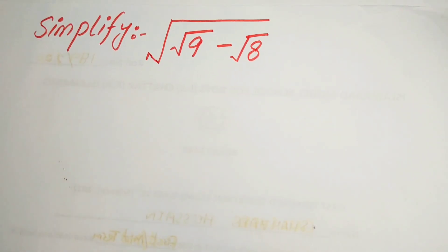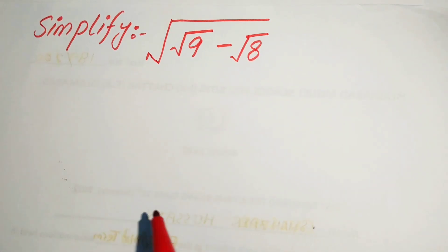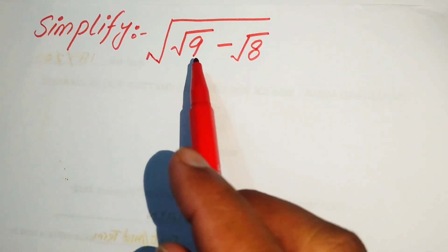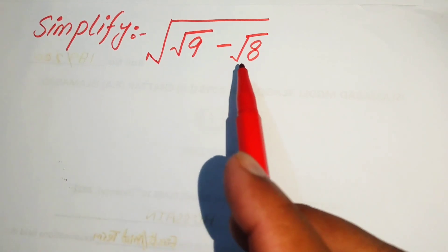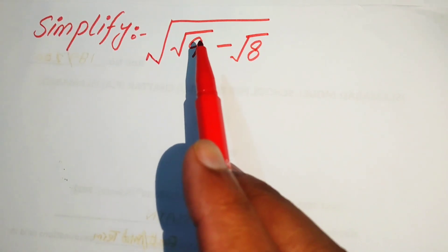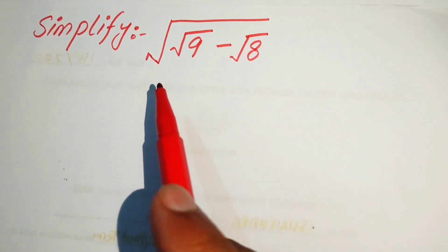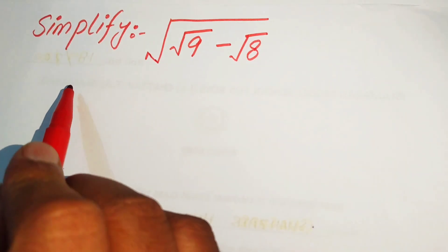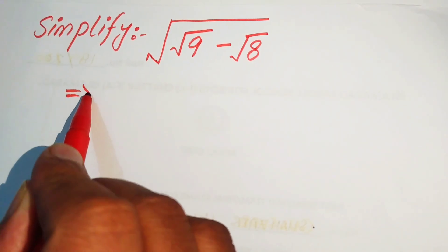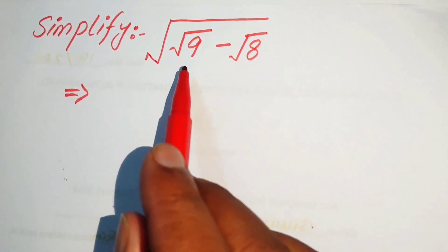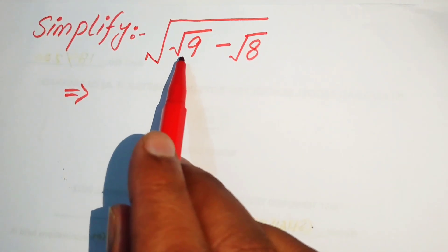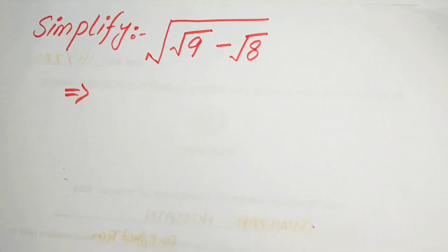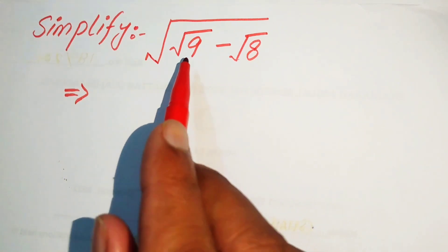Hello everyone. How to simplify this nice algebraic expression: we have a square root of 9 minus square root of 8, and its whole square root. We write this into simplified form. First, we focus on its base, which is square root of 9 minus square root of 8.